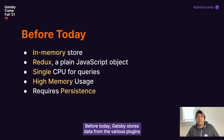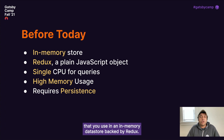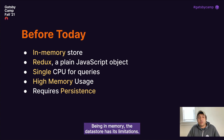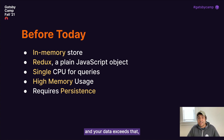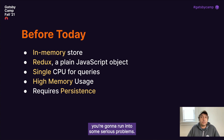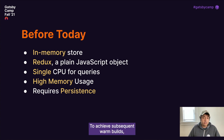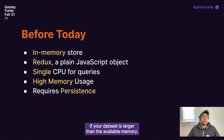Before today, Gatsby stores data from the various plugins that you use in an in-memory data store backed by Redux. You also have a single CPU to query the data store, which limits the amount of data you can retrieve concurrently. Essentially, you're only as fast as your slowest request. Being in memory, the data store has its limitations. If your machine has eight gigabytes of RAM and your data exceeds that, you're going to run into some serious problems. Many of our larger sites run into high memory usage scenarios all the time. To achieve subsequent warm builds, the store requires persistence, which will be impossible if your dataset is larger than the available memory.